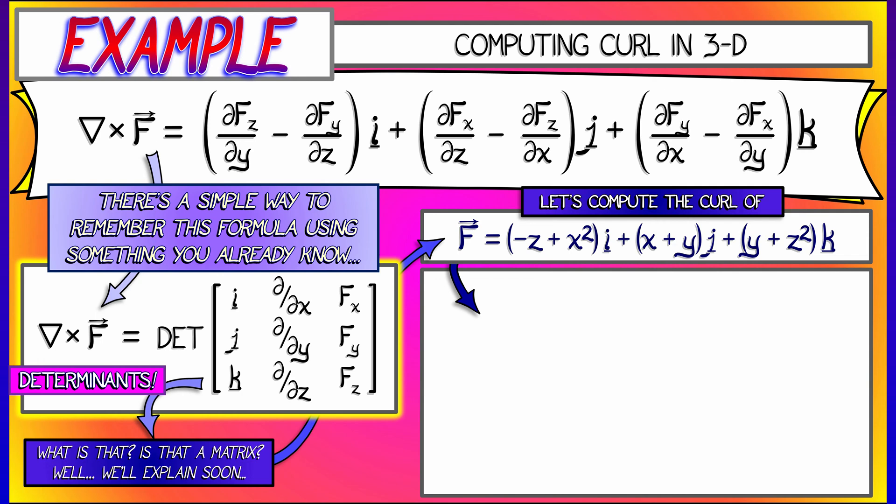If I take the components of this vector field and pop that into the third column of this three by three matrix and then start computing the determinant, how do I do that? The I component is partial FZ partial Y minus partial FY partial Z. That gives me just a value of one.